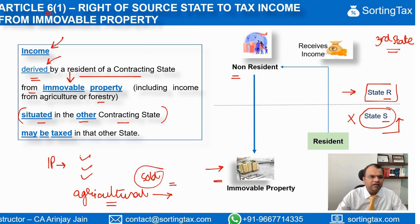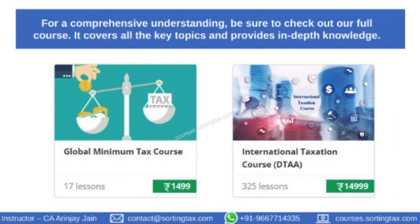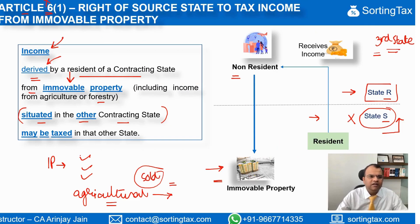At least under Article 6 — there may be cases where there is a PE of the non-resident which is doing the job of acquiring, selling, renting, and dealing with these properties. So if there is income that a PE situated in the state of source derives from an immovable property in a third state, that may be taxable here, but definitely that is not going to get taxed under Article 6.